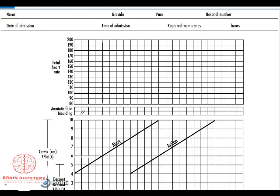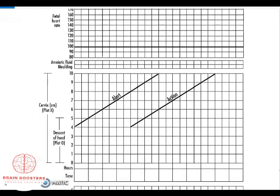The next part is cervical dilation and descent of the head. Cervical dilation is assessed through vaginal examination and determines whether you should start using the partograph. The partograph is opened when the woman is in the active stage of labor, which begins at four centimeters of cervical dilation. So you open the partograph when cervical dilation is four centimeters and above.